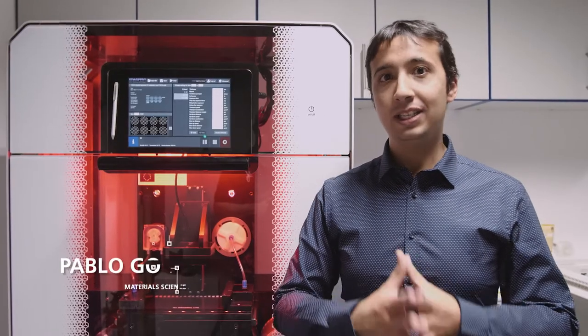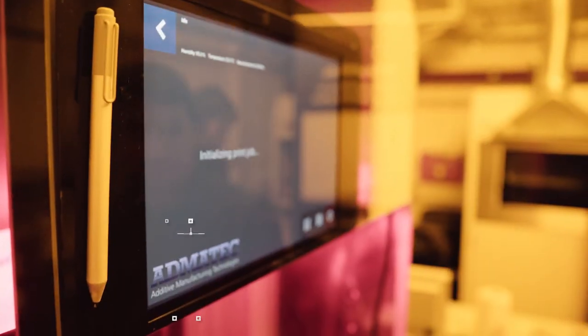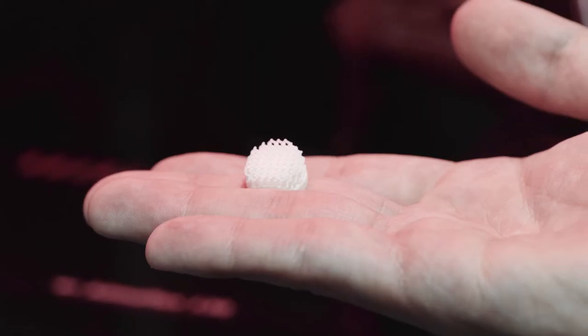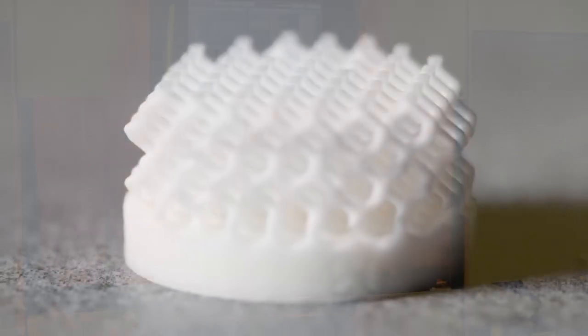DLP or Digital Light Processing is a technique that uses the power of light and photo curable resins in order to achieve 3D printed materials with very fine details.